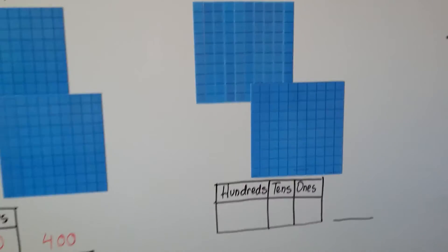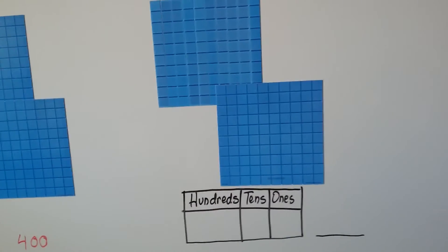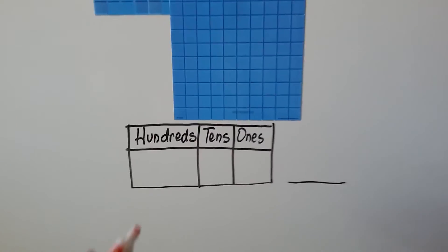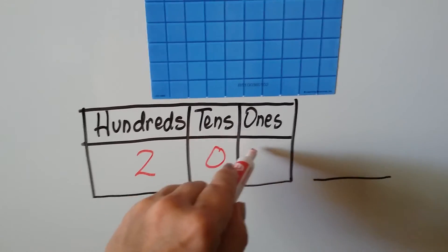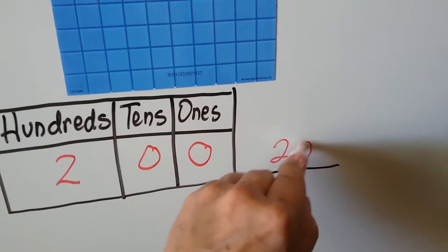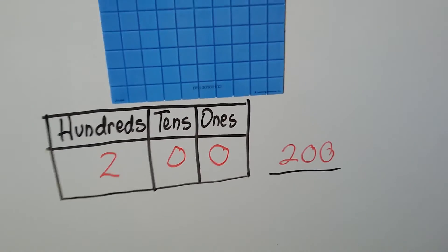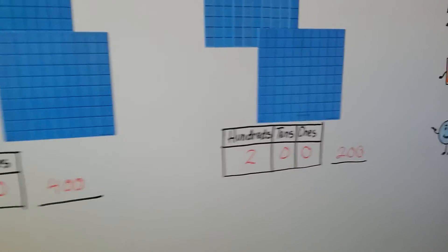How about this one? 100, 200. There's 200. We'd write that as a 2 in the hundreds place, 0 tens, 0 ones. Writing it as a numeral, we'd write a 2, 0, 0. 2 in the hundreds place, 0 tens and 0 ones.